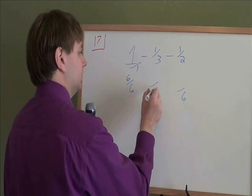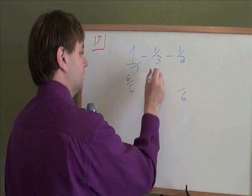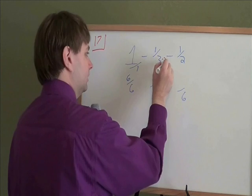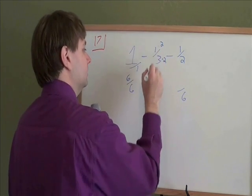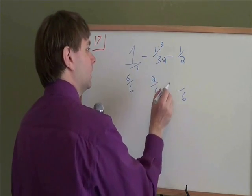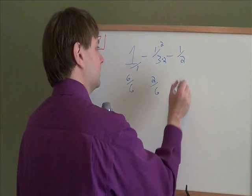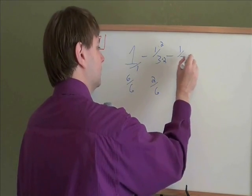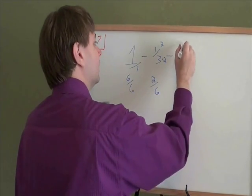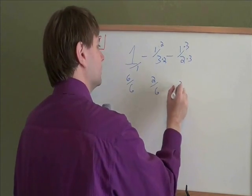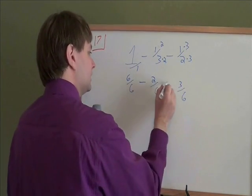1 third into something over 6. Well, 3 times what gives you 6? 3 times 2. And then 1 times 2 is 2. How do you get from halves to sixths? You multiply by 3. 2 times 3 is 6. And 1 times 3 is 3. The minuses stay there.